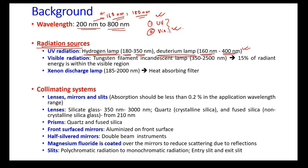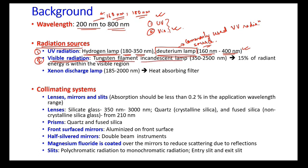In current-day UV-visible spectroscopes, the deuterium lamp is the most commonly used UV radiation source. For the visible radiation source, we usually use a tungsten filament incandescent lamp, which generates radiations in the range of 350 to 2500 nanometers. However, visible spectroscopy works up to 800 nanometers, because beyond that we are in the infrared region.